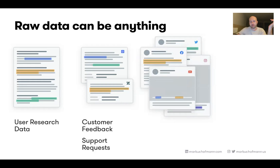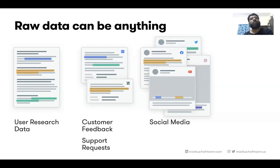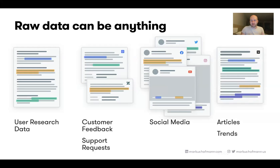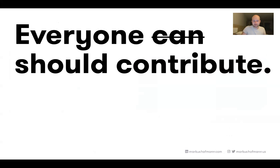Raw data can really be anything: proper user research data, customer support data, social media — go on social media and find out what people say about your competitors, your own product, and the industry. Every now and then you add nuggets and it completes the picture, giving you different perspectives on the same problem. It can be articles about trends and industry — literally anything. This means everyone can contribute, and not just can but everybody should. It makes it really, really powerful.